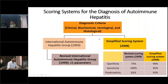Coming to the scoring systems for the diagnosis of autoimmune hepatitis, diagnosis is mainly based on clinical, biochemical, serological, and histological parameters. The scoring system was given by the International Autoimmune Hepatitis Group in 1993, revised in 1999 with 11 parameters. In 2008, the simplified scoring system was proposed with greater specificity and predictability. However, the sensitivity of the simplified scoring system is lesser than the revised scoring system.